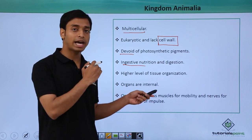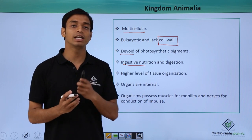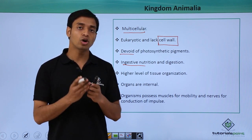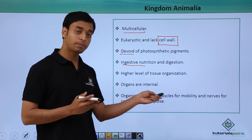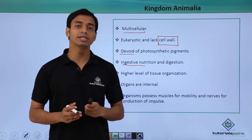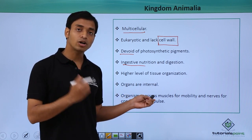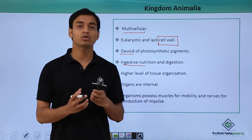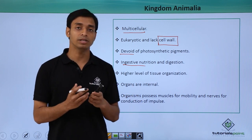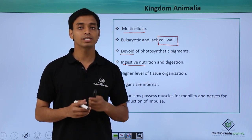A very important characteristic of the animal kingdom is that they have muscles, which help in their mobility — something that was absent in the plant kingdom. Plants are non-motile and cannot move, but animals can move because of the presence of muscles. Another important characteristic is the presence of the nervous system, or neurons and nerve cells. Because of this, animals can respond to external stimuli, and the nervous system helps in the conduction of impulses, allowing them to respond quickly to environmental conditions.